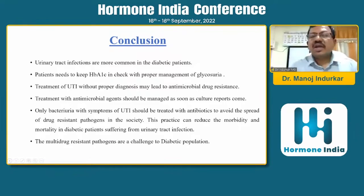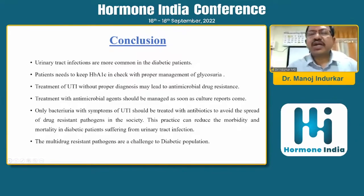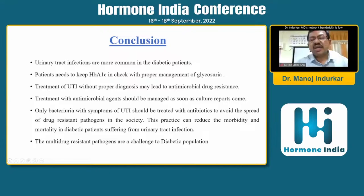In conclusion, UTI is one of the common complications we see in diabetic patients. We must monitor HbA1c regularly every three to six months, and if it is very high, ask the patient to control it. Making patients euglycemic is essential — a simple UTI may lead to a worst outcome if the patient is not euglycemic. Antibiotics must be very specific; the most common organism is E. coli. Thank you very much.